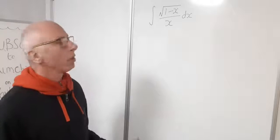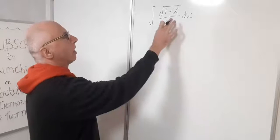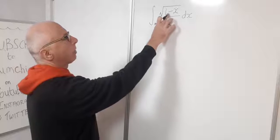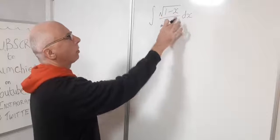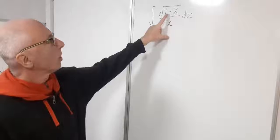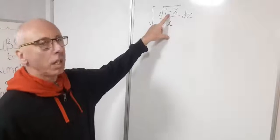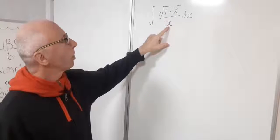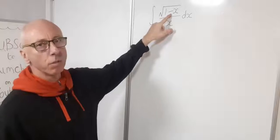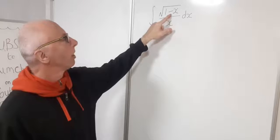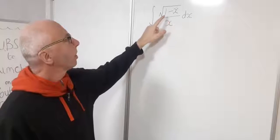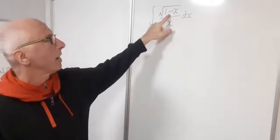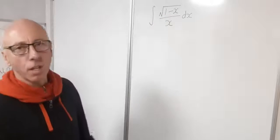The question is which u-substitution to use. We could do u equals x, giving a square root of 1 minus u, or u equals 1 minus x, which leaves a square root of u in the numerator. Instead, I'm going to go with u equals the square root of 1 minus x.